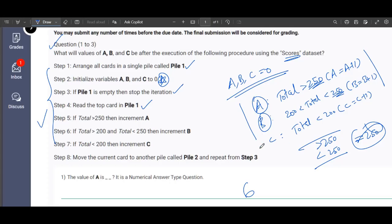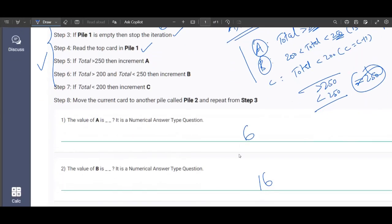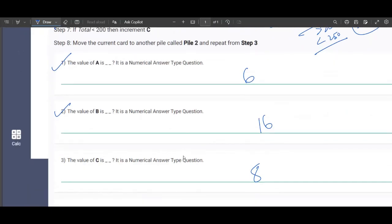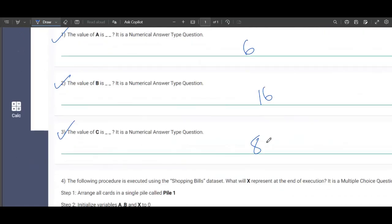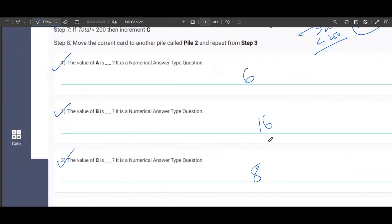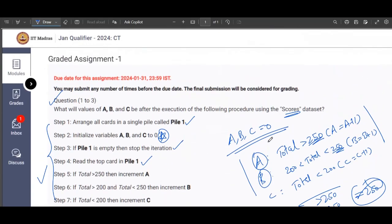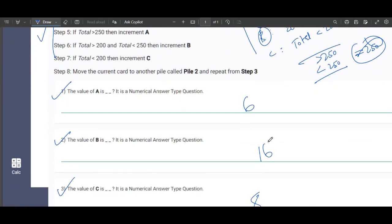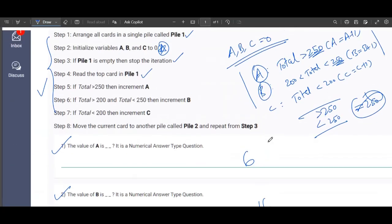The answer would be: the value of A is 6, B will be 16, and C is 8. These are the answers which have been got internally according to the scores dataset that has been provided by IIT Madras. So this is about the first, second, and third question.